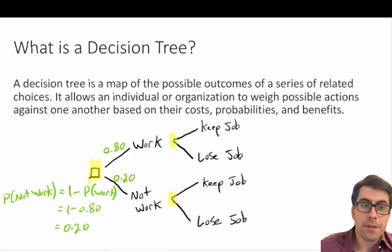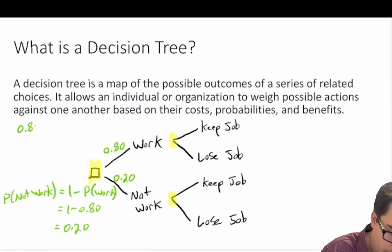Note that the probabilities of 0.8 plus 0.2 sum to 1. So at every decision point, whether it be the decision node or the chance node, the sum of the probabilities across the branches must add up to 1. So just to re-emphasize this, 0.80 plus 0.20 is equal to 1.